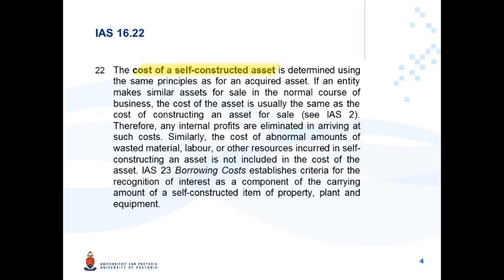The cost of a self-constructed asset is determined using the same principles as for an acquired asset. If an entity makes similar assets for sale in the normal course of business, the cost of the asset is usually the same as the cost of constructing an asset for sale — this refers to IAS 2. If you are constructing a PPE item for use as PPE, the principles applied in calculating its cost would be similar to those found in IAS 2 on inventories.